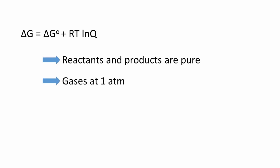We can account for this with the formula delta G equals standard delta G plus R times T times ln of Q. Standard delta G is the value of the Gibbs free enthalpy change when all the reactants and products are pure, gases are at a pressure of one atmosphere, and solutes are present at a concentration of one molar.